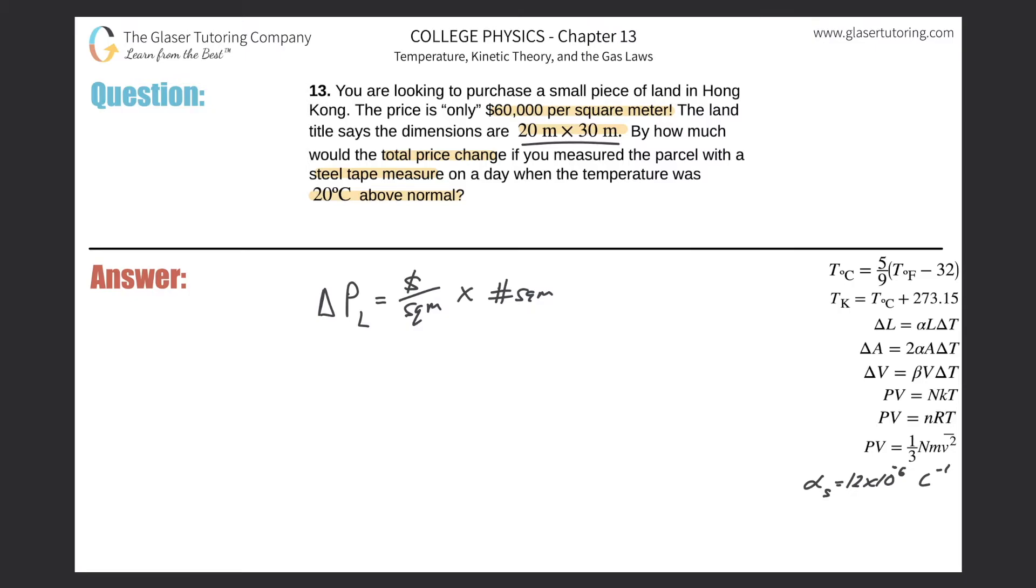Obviously we're going to get a different reading. The tape measure will still read 20 by 30, but it might not actually be 20 by 30 relative to the dimensions that were measured originally. So this is the variable that will change, so I can just stick a little delta here.